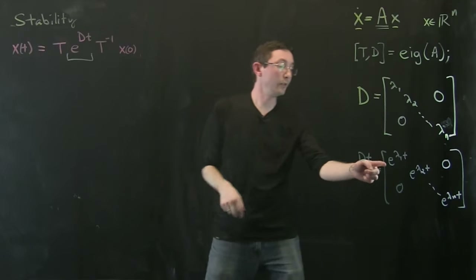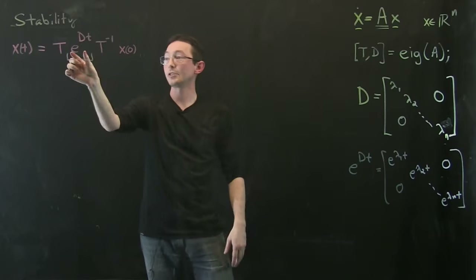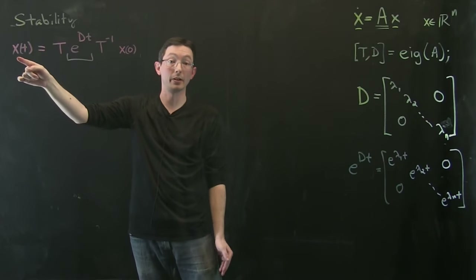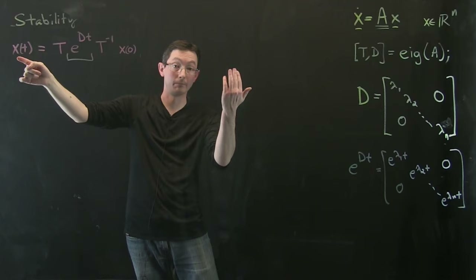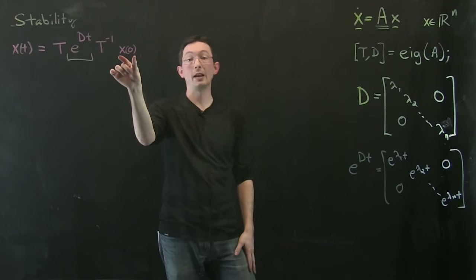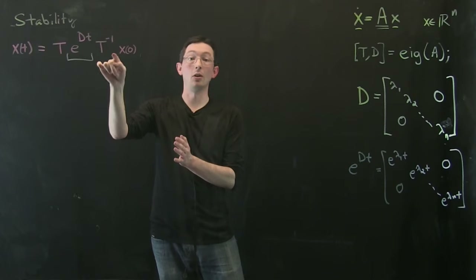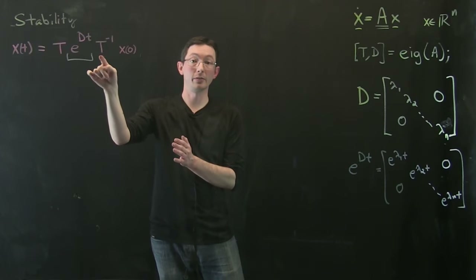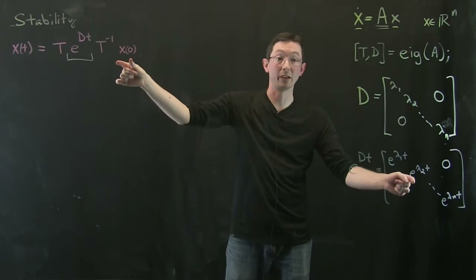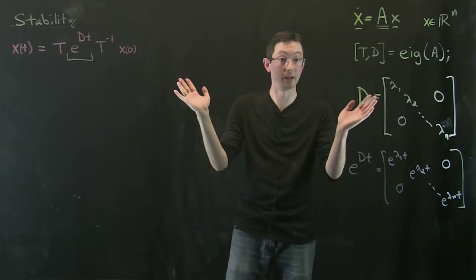If even one of these matrix exponentials blows up to infinity, then since we're mixing them together, x is also going to blow up to infinity. Especially if you take a random initial condition that has some component in all eigenvector directions, chances are it'll have a component in an unstable eigenvector direction and that will blow up.